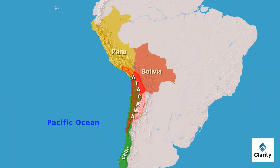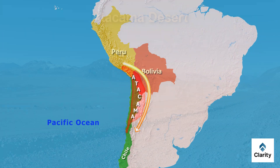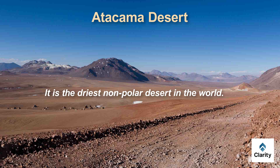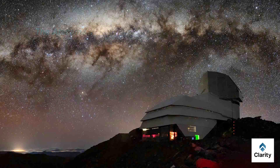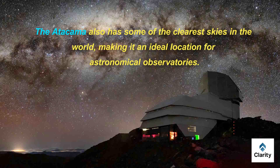The Atacama Desert is on the western side of the Andes in northern Chile. It is the driest non-polar desert in the world — some parts have had no recorded rainfall for decades. Its dryness is due to its location between two mountain ranges and the cold Humboldt Current along the coast. The Atacama also has some of the clearest skies in the world, making it an ideal location for astronomical observations.